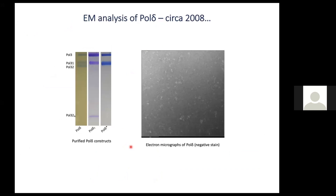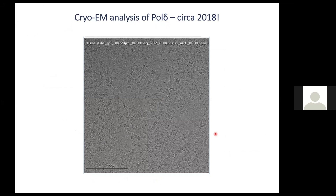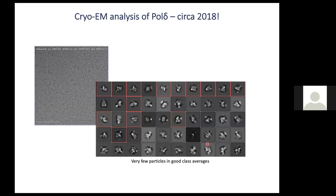To gain further insight we also tried cryo-EM in 2008 with negatively stained Pol delta — three different variants. As you can see, the micrographs were quite heterogeneous; we didn't see consistent shape or size for the particles, and at that time we were unable to process this data further. Fast forward to 2018, after fantastic advances in cryo-EM software and hardware, we revisited the EM efforts with cryo-EM.